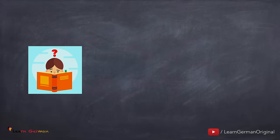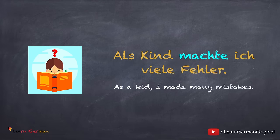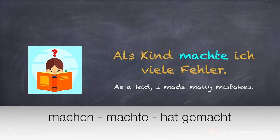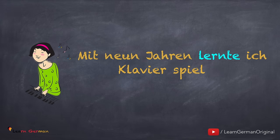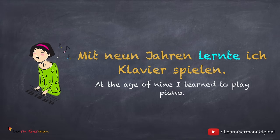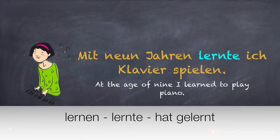Jetzt schauen wir uns ein paar Beispiele an. Als Kind machte ich viele Fehler. Das Verb ist machen, Präteritum ist machte und Partizip Perfekt ist gemacht. Wenn man die Vergangenheitsform lernt, es ist immer gut, Infinitiv, Präteritum und Perfektform zu lernen. Machen, machte, hat gemacht. Mit neun Jahren lernte ich Klavier spielen. Lernen, lernte, hat gelernt.